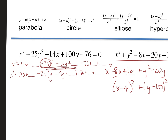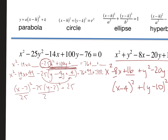Half of −14 is −7, squared is 49. Half of −4 is −2, squared is 4, but I've changed the equation by −25 × 4 = −100 on the right side. Factoring gives (x − 7)² − 25(y − 2)² = 25. Since it's a hyperbola it must equal 1, so I divide by 25: (x − 7)²/25 − (y − 2)²/1 = 1.